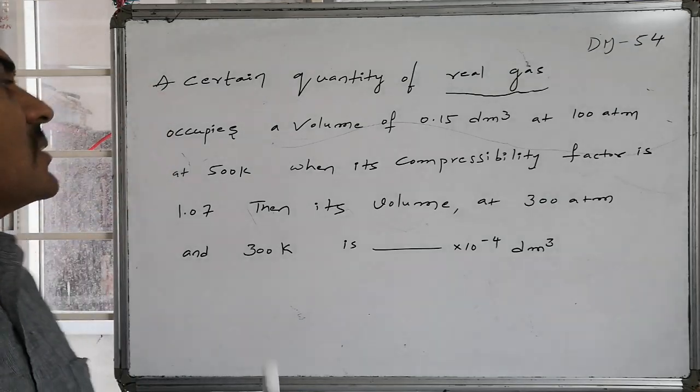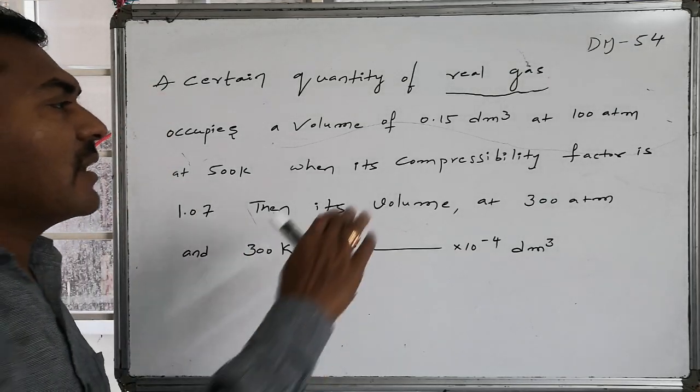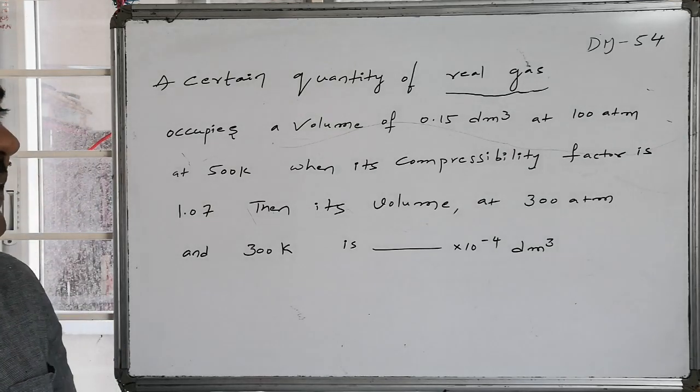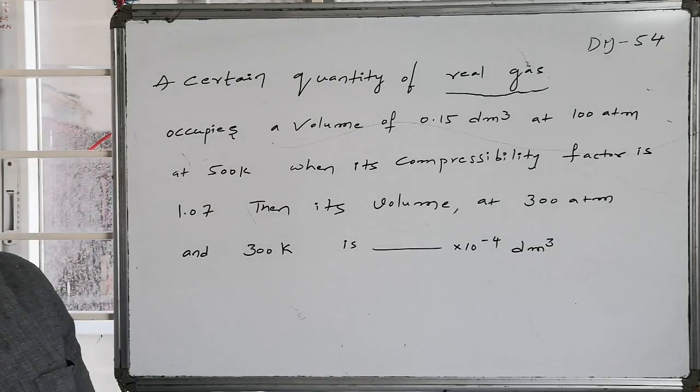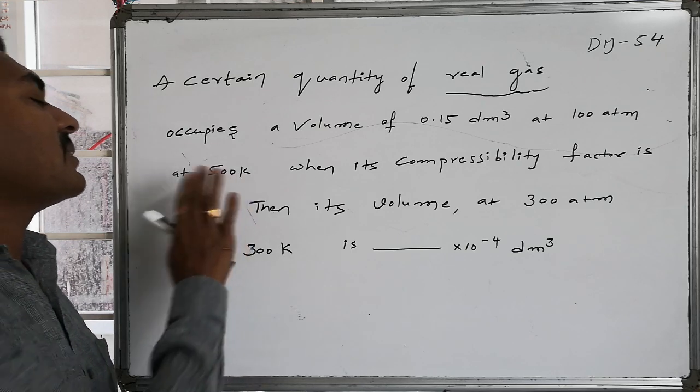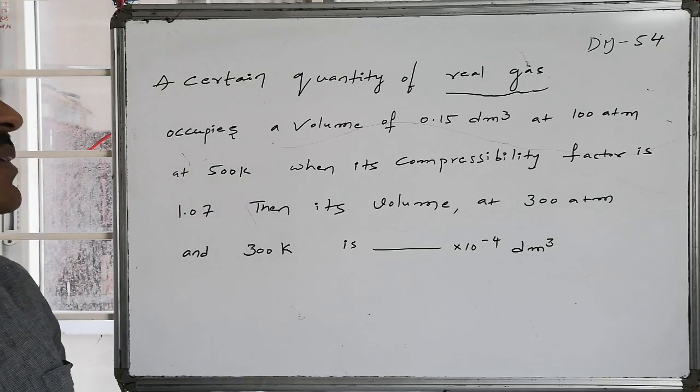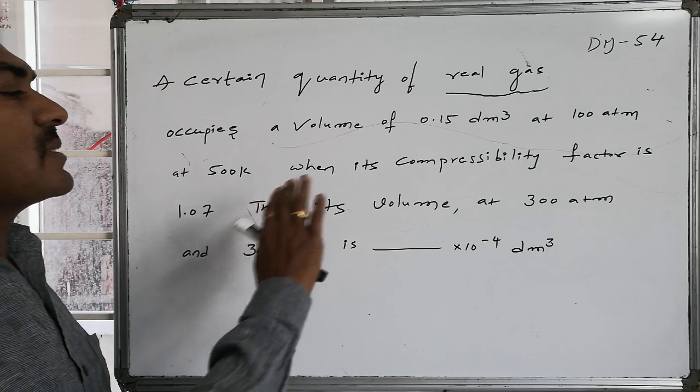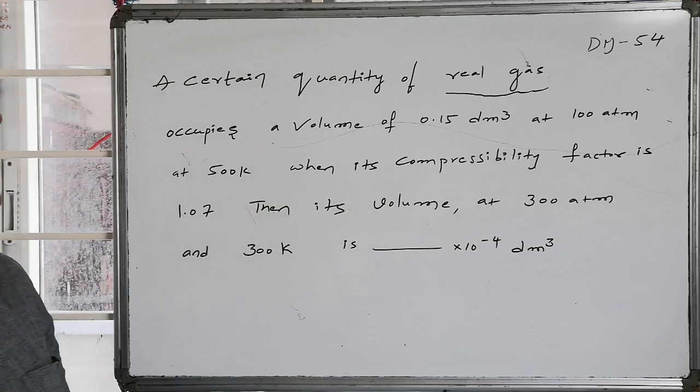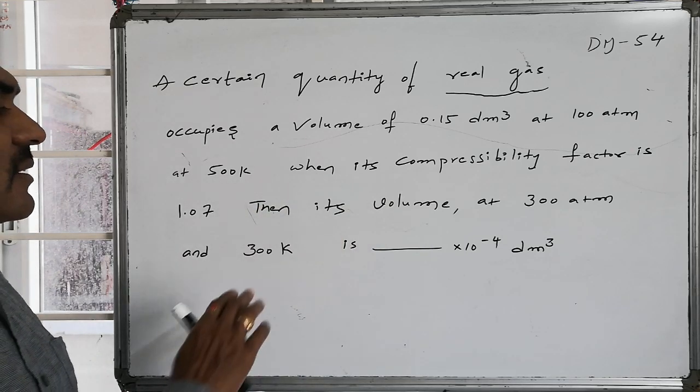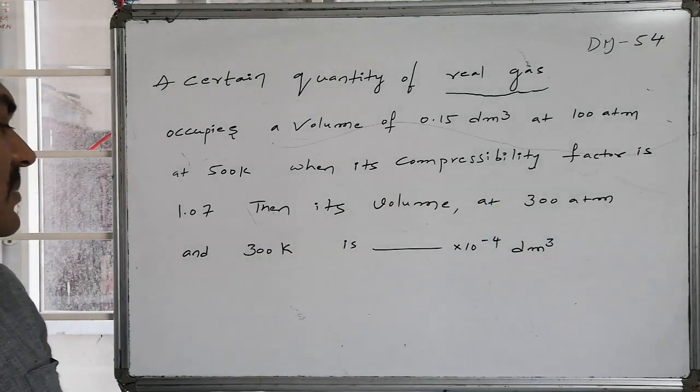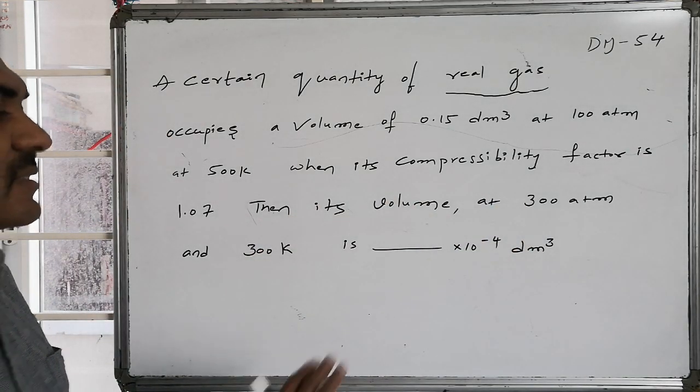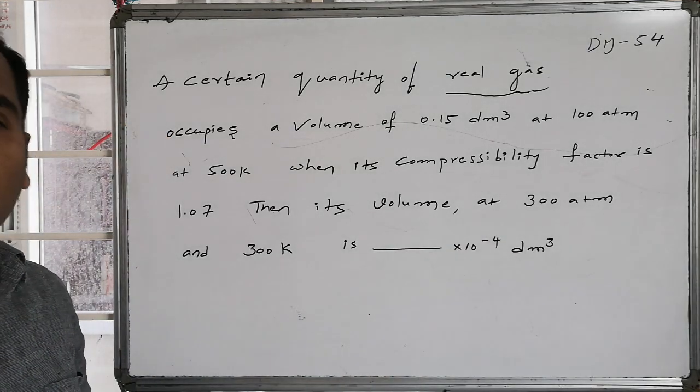That real gas occupies a volume of 0.15 decimeter cubes, that is 0.15 liters, at 100 atmospheres, followed by the temperature of 500 Kelvin. The corresponding compressibility factor is found to be 1.07. Then what might be its value at 300 atmospheres and 300 Kelvin? It's some x into 10 power minus 4 liters.